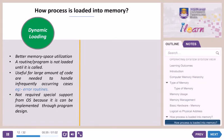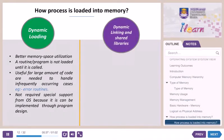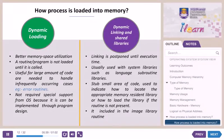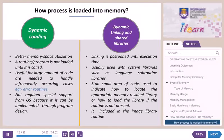The second method is dynamic linking and shared libraries. In this method, the linking of libraries is postponed until execution time, and it is usually used with system libraries such as language subroutine libraries. A stub — a small piece of code — is used to indicate how to locate the appropriate memory-resident library, or how to load the library if the routine is not present. This is also included in the image library routine.